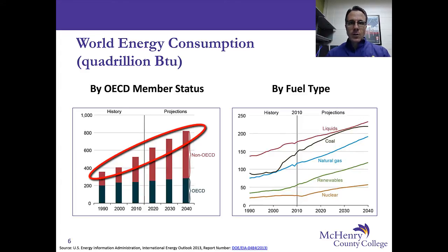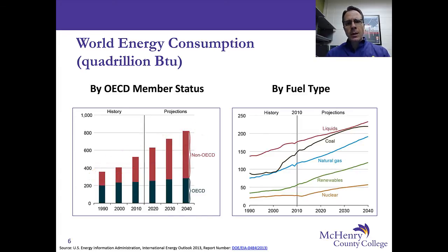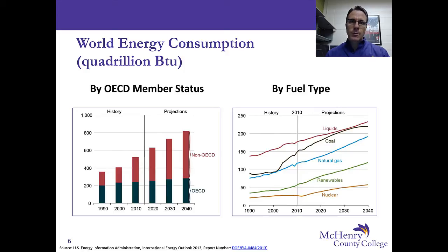These countries, especially led by China and India, are going to be consuming ever greater quantities of energy than they ever have before. And this means that the OECD countries and the non-OECD countries are going to be competing, essentially, for the same energy resources, whether they're non-renewables or renewables.